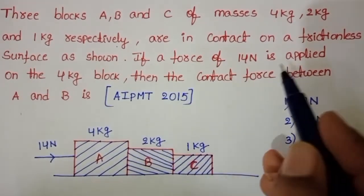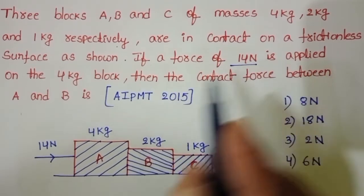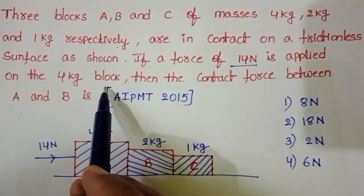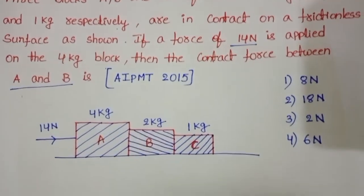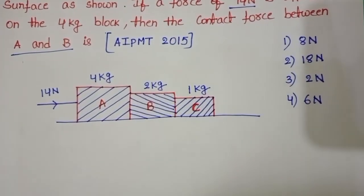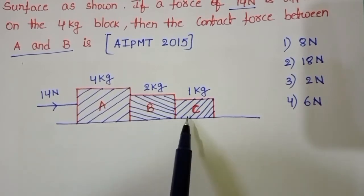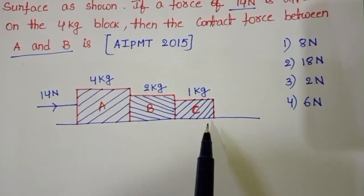If a force of 14 N is applied on the 4 kg block, then the contact force between A and B is what we need to find. Observe the given diagram: these three blocks in contact on a frictionless surface.